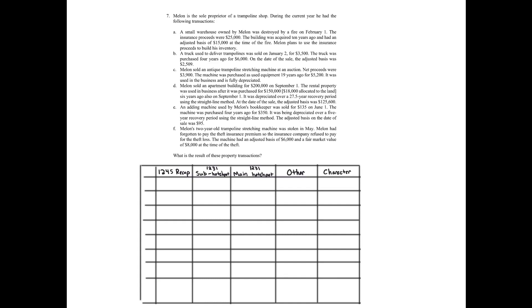This is problem seven. Mellon is a sole proprietor of a trampoline shop — so this is a business operation. During the current year, he had the following transactions: A, B, C, D, E, F. We're going to go through each transaction separately. If you need to pause the video and write out the chart, please do that.